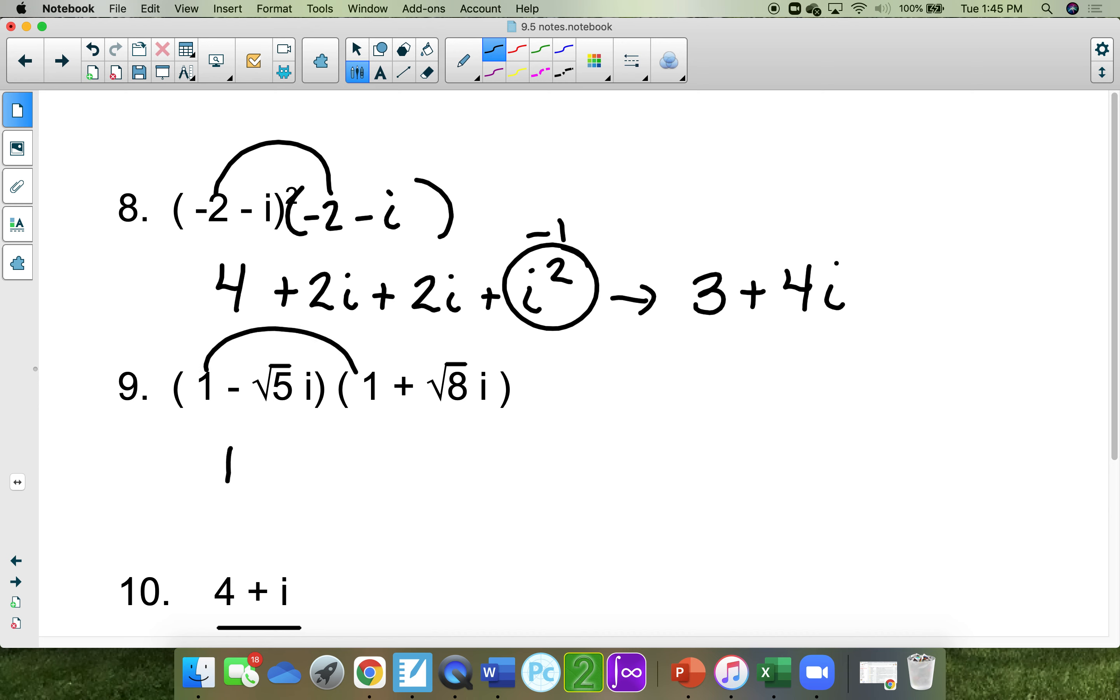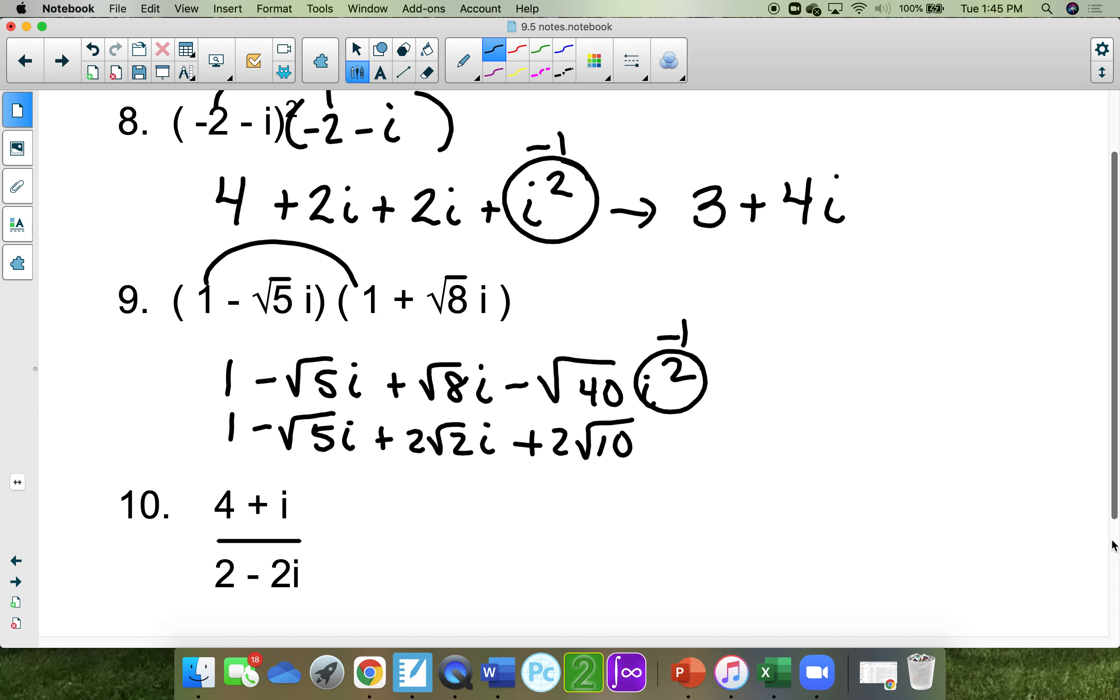1 times 1 is 1 minus the square root of 5i, plus the square root of 8i, minus the square root of 40i squared. This makes 1 minus the square root of 5i, plus 2 root 2i, minus 4 times 10, which would be 2 root 10, and positive 2 root of 10, because remember this makes a negative 1. That is your final answer. There's nothing you can put together on number 9.